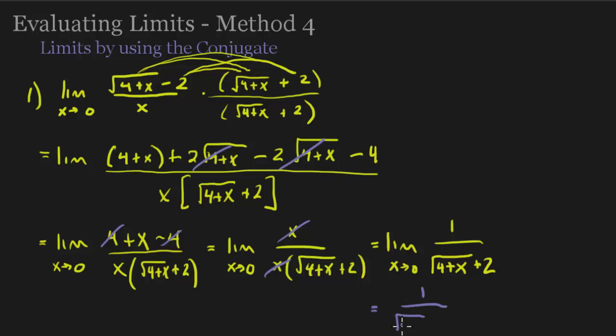We're going to get 1 on top, the square root of 4 plus 0 plus 2. Well, the square root of 4 plus 0, that's the square root of 4, which is 2, plus 2 is 4. So, we do have an answer. The limit is 1 fourth.